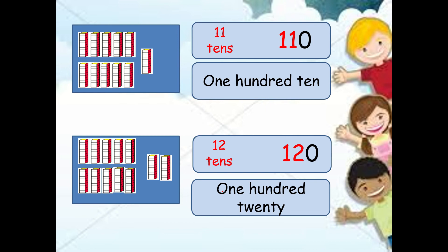Now how about this example? Let's count how many groups of tens there are: one, two, three, four, five, six, seven, eight, nine, ten, eleven. We have here eleven tens. So to write the number, write eleven and add zero. But when we read this number, remember in three-digit numbers the first digit means hundreds. This means there is one hundred. So we will read this number as one hundred ten. What number is this? One hundred ten. Very good.